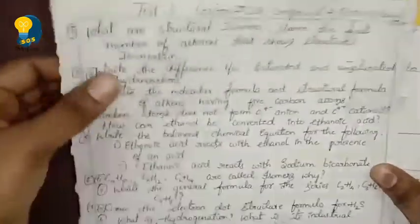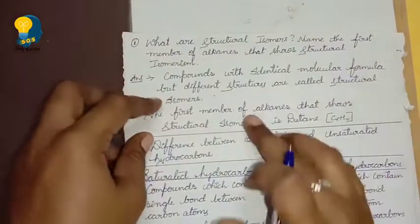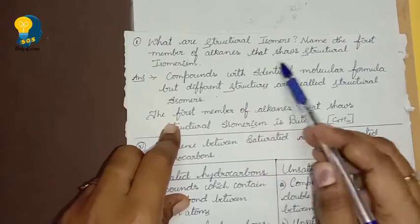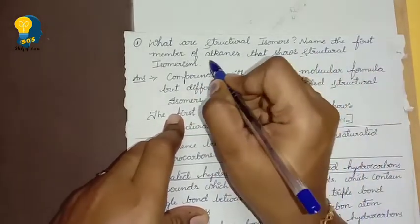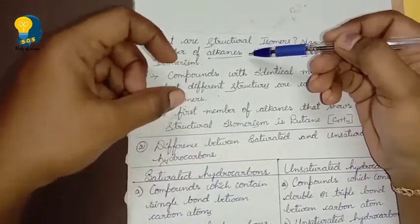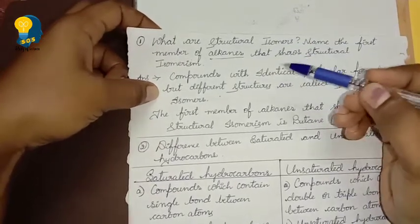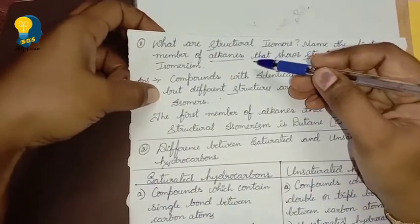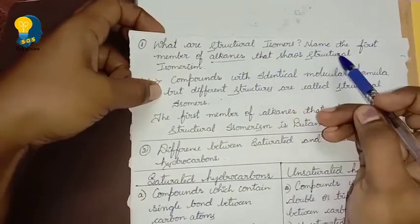So first question — I will write it with answers. The first question is: What are structural isomers? Name the first member of alkanes that shows structural isomerism. Friends, one important thing you need to note — in this carbon and its compounds lesson, whenever any question comes, the words alkane, alkene, alkyne are important. You should be able to recognize and pronounce them correctly. That is one important thing.